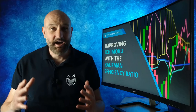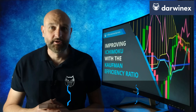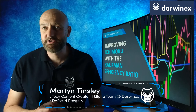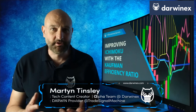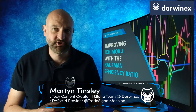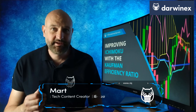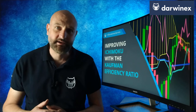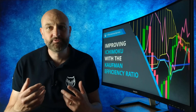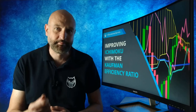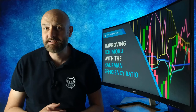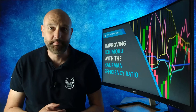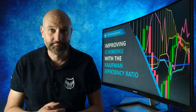Now back to today's tutorial. I implement a noise filter alongside the Ichimoku trading strategy that we've been implementing. My noise filter of choice is the Kaufman efficiency ratio, and the intended reason for implementing a filter such as this is to reduce the number of whipsaws, which are more likely to occur when the price action is exhibiting noisy behaviour. Let's take a look.